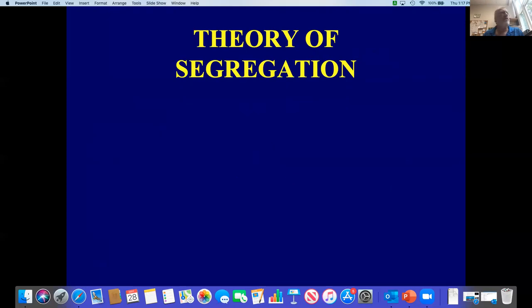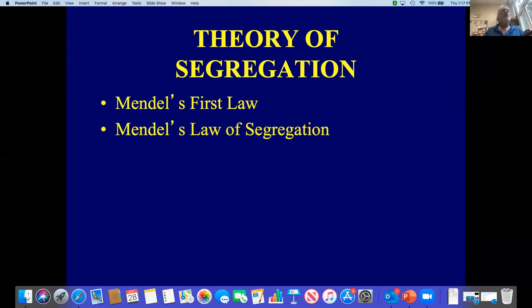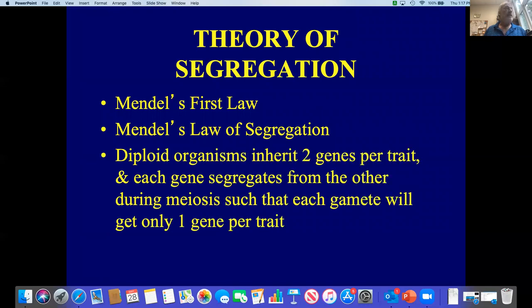Mendel's theory of segregation — sometimes called Mendel's first law or Mendel's law of segregation — states that diploid organisms inherit two genes per trait, and each gene segregates from the other during meiosis such that each gamete will get only one gene per trait. It's a description of how alleles separate during meiosis.